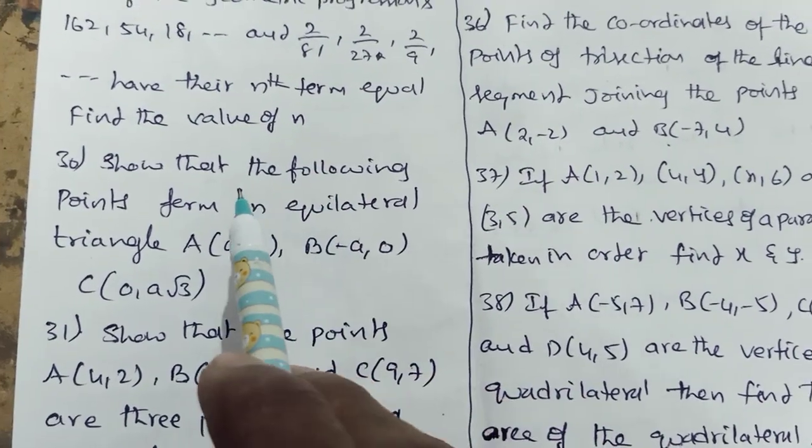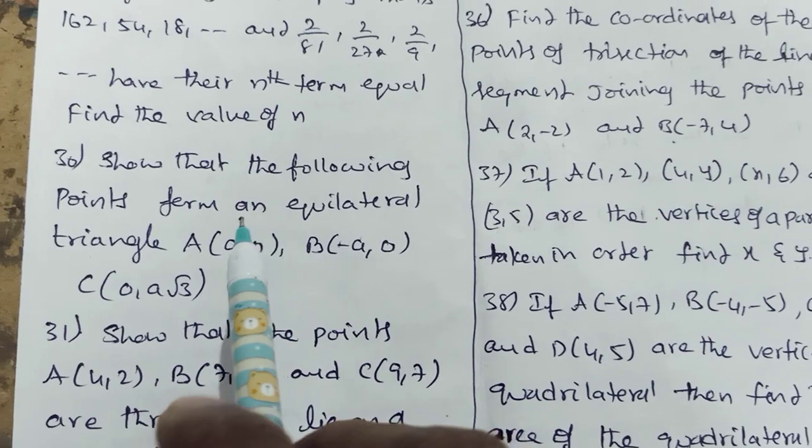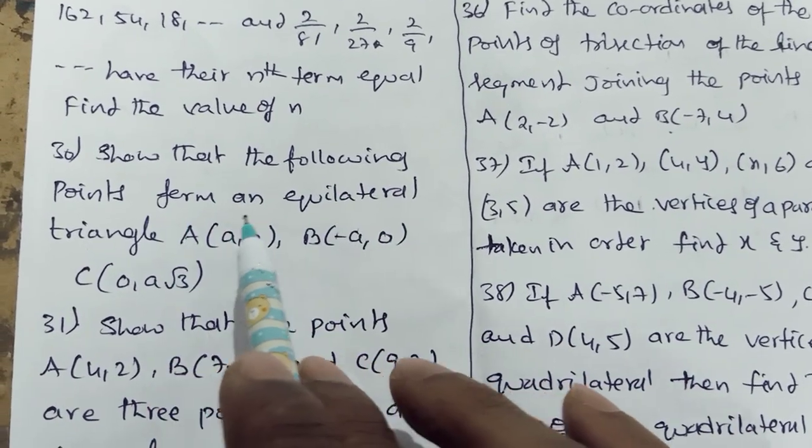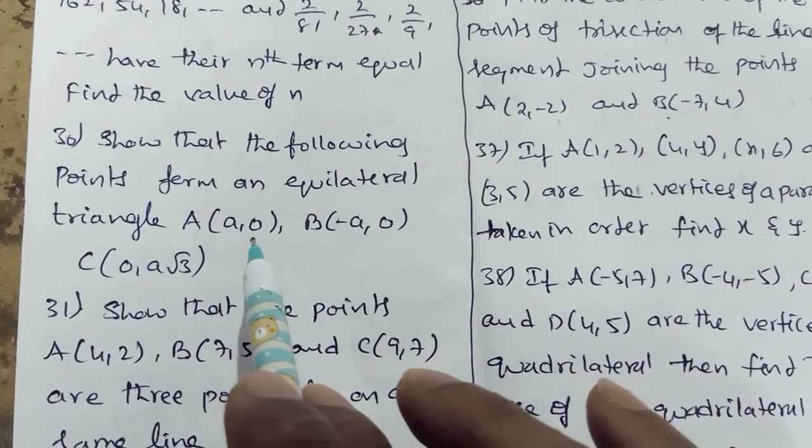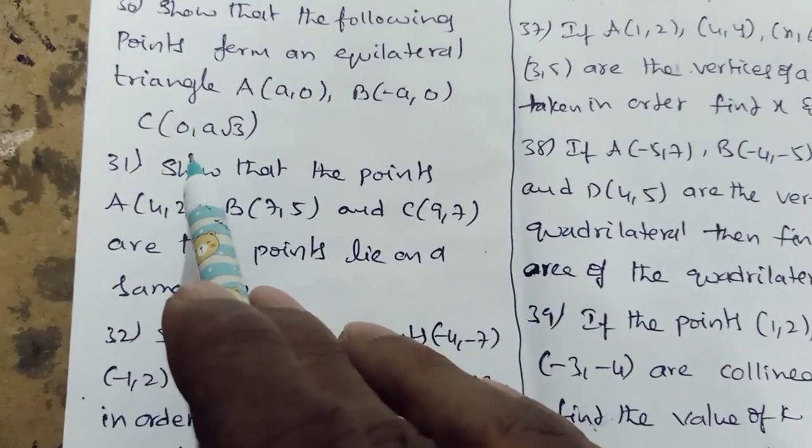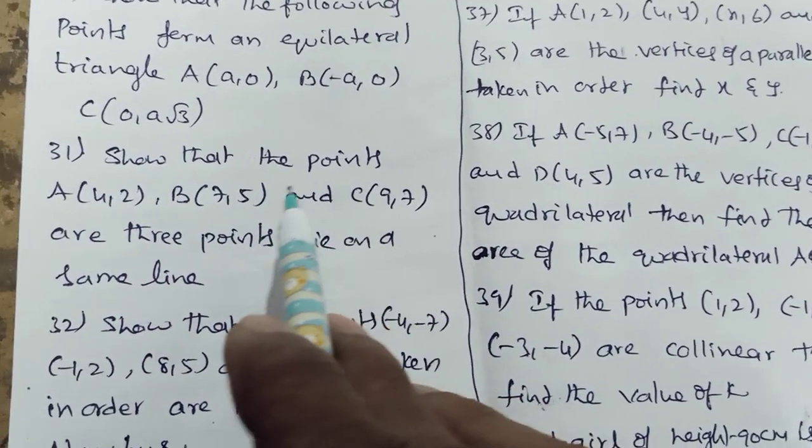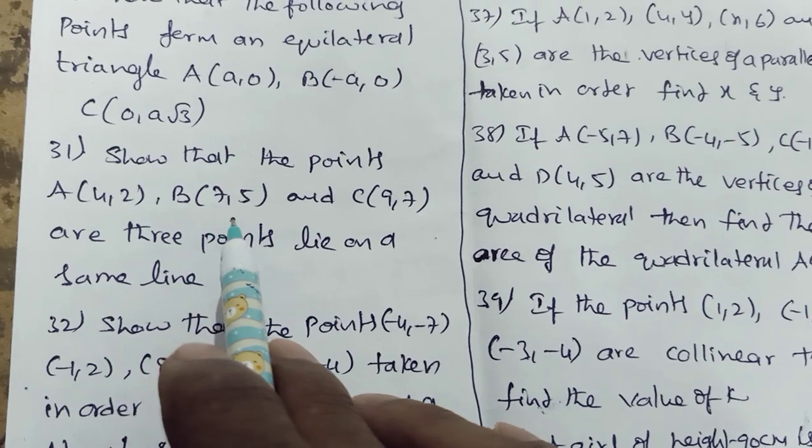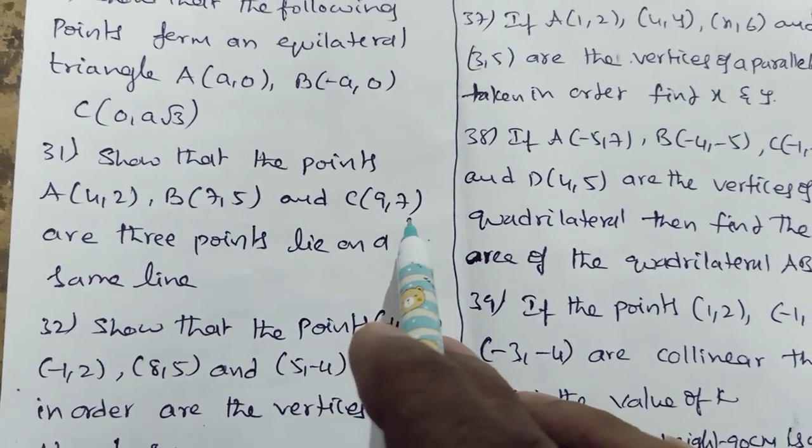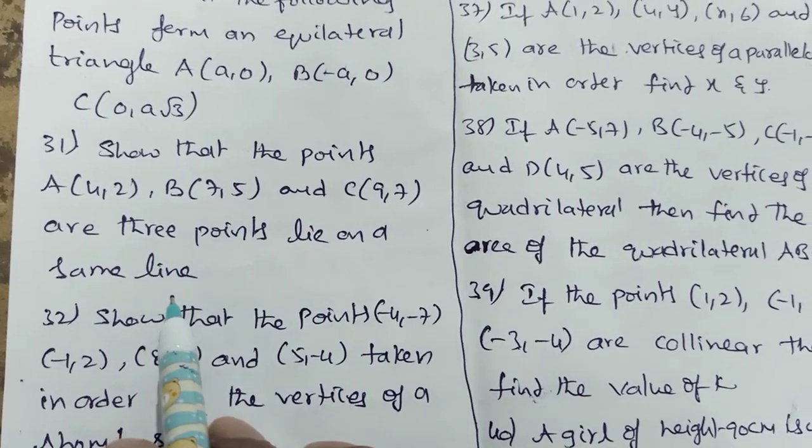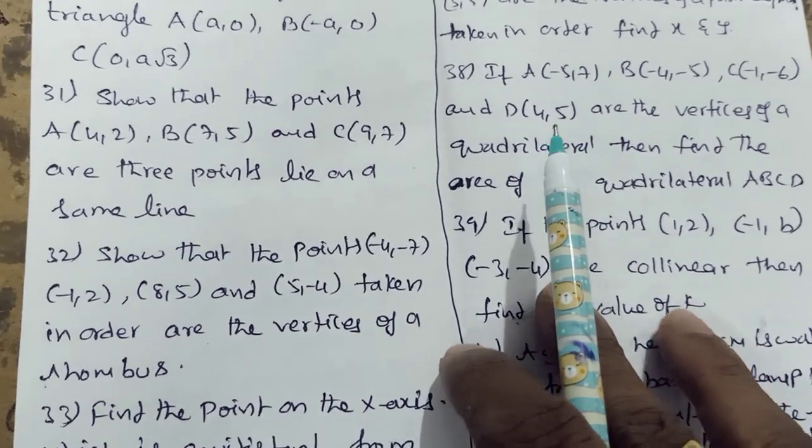Coordinate geometry. Show that the points a 0, b a 0, c 0 a root 3 form an equilateral triangle. Show that the points a 4 2, b 7 5, and c 9 7 are 3 points that lie on the same line, that is, they are collinear.